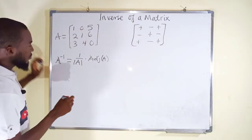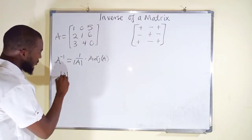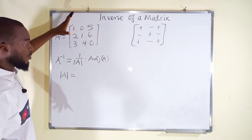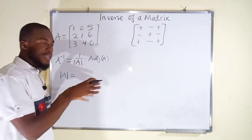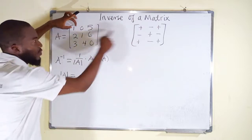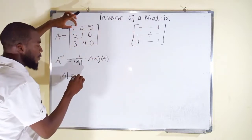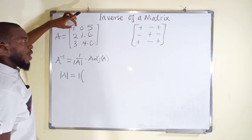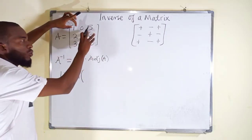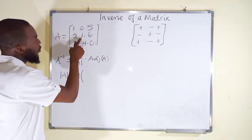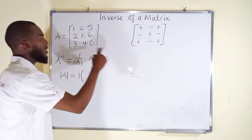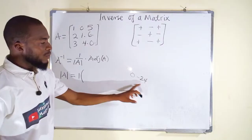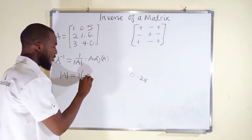The determinant of matrix A will be calculated using the first row only. Starting with 1 — which is positive — we close its row and column and are left with entries 1, 6, 4, 0. The determinant of these is 1 times 0 minus 4 times 6, which is 0 minus 24, giving minus 24. The second entry is 0, so that term becomes 0.